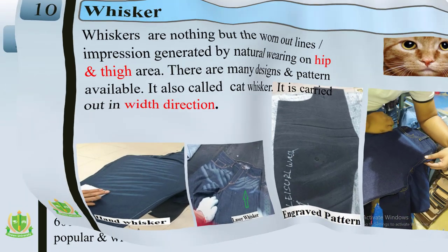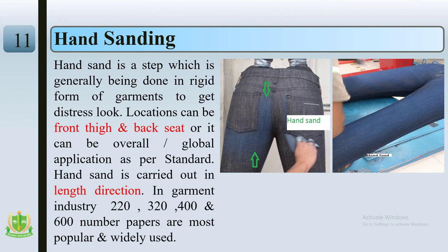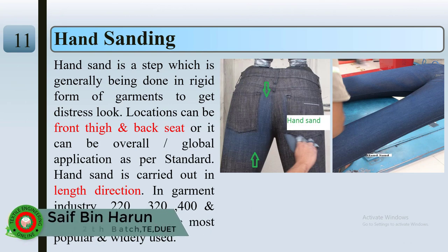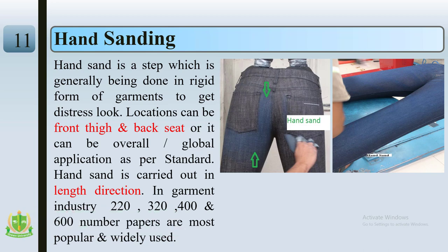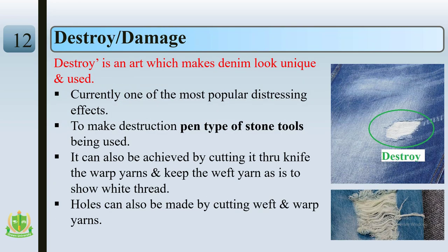Hand sanding is an abrasion process with sandpaper done by hand. It is created on the front thigh and back seat area, and carried out in the length direction. There are several types of sandpaper — 220, 320, 400, and even up to 1200 grit.